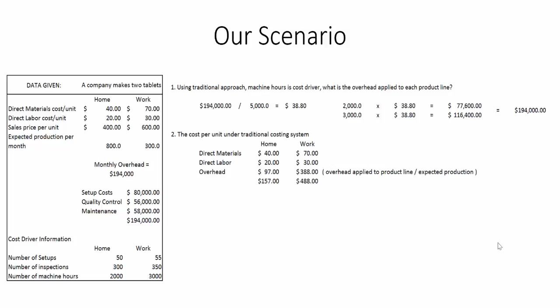Now, the cost per unit under a traditional costing system: for the home tablet, direct materials is $40, direct labor is $20, and the overhead applied is $97. You get that by taking the overhead applied to that product line — $77,600 — and dividing by the expected production of 800 units. So $77,600 divided by 800 units gives you $97 of overhead per unit.